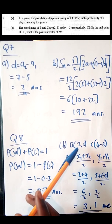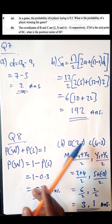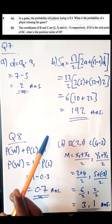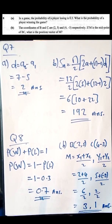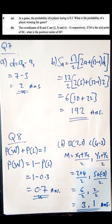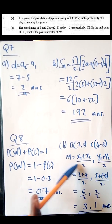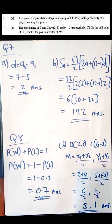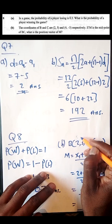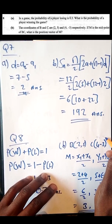The coordinates of B are (2, 5) and the coordinates of C are (4, 3). We want to find the midpoint of the line BC using the midpoint formula. So x1 = 2, y1 = 5, x2 = 4, and y2 = 3.